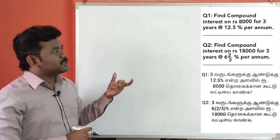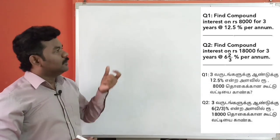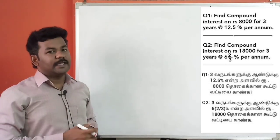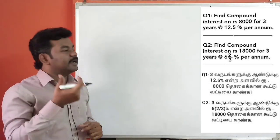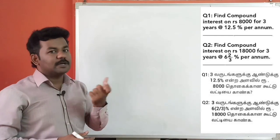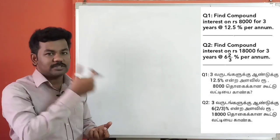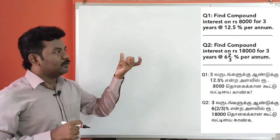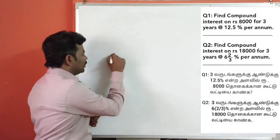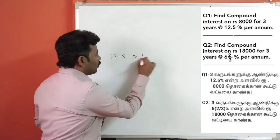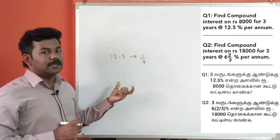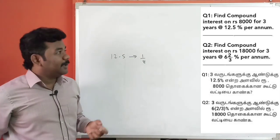Find the compound interest of Rs. 8,000 for 3 years at 12.5%. To solve this, we convert 12.5% to a fraction, which is 1 by 8.